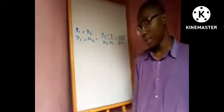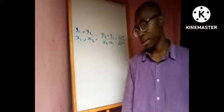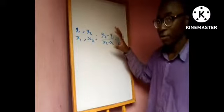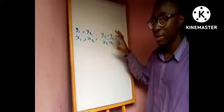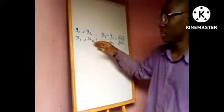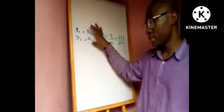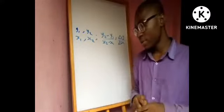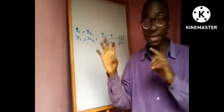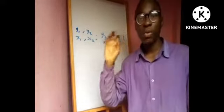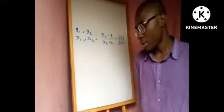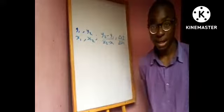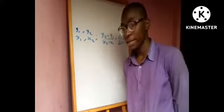The gradient of a line passing through points (x1, y1) and (x2, y2) is given by (y2 minus y1) over (x2 minus x1). Next, the general equation of a straight line is y equals mx plus c, where m is the gradient and c is the intercept on the y-axis.